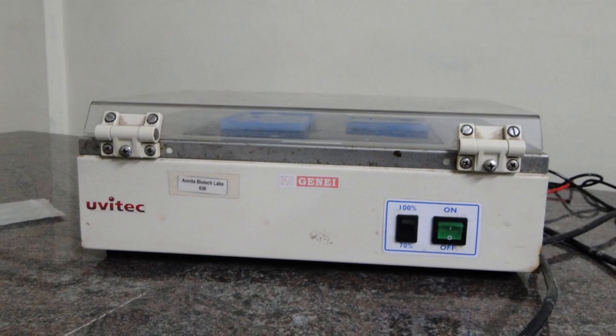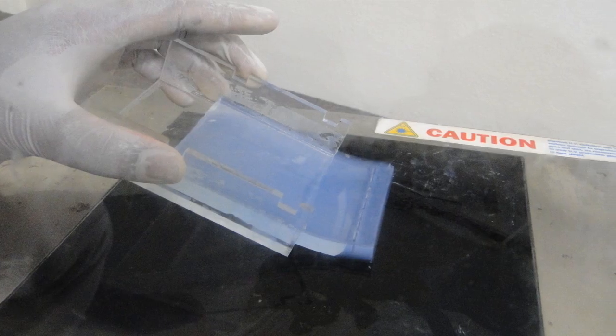Transilluminator, an ultraviolet light box which is used to visualize ethidium bromide stained DNA in gels.